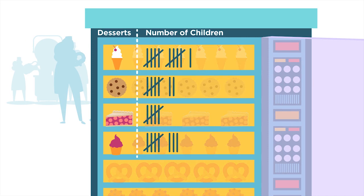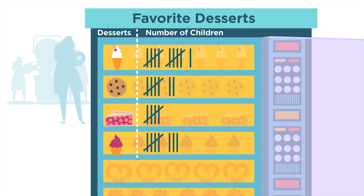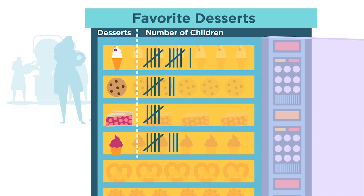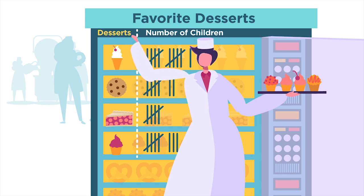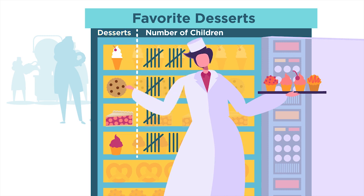This tally chart shows the results of a survey asking the question: What is your favorite dessert? Notice the title at the top — it tells what the chart is about: Favorite Desserts. The left side lists the categories and includes the heading Desserts. The categories are ice cream, cookies, pie, and cupcakes.